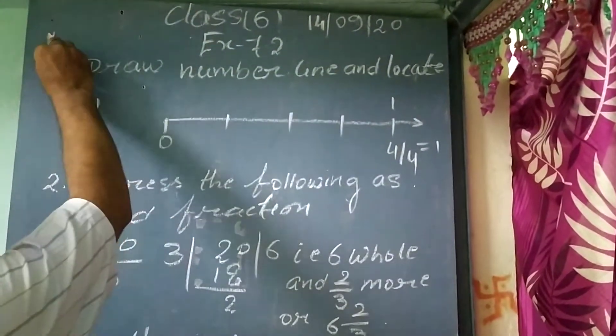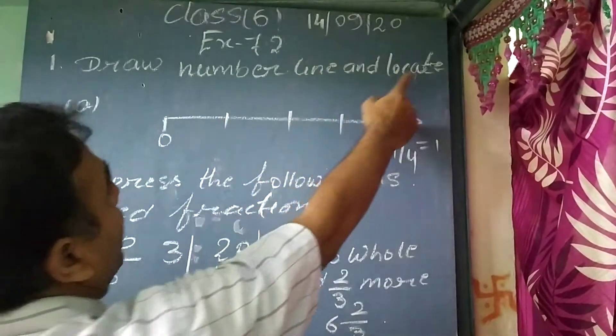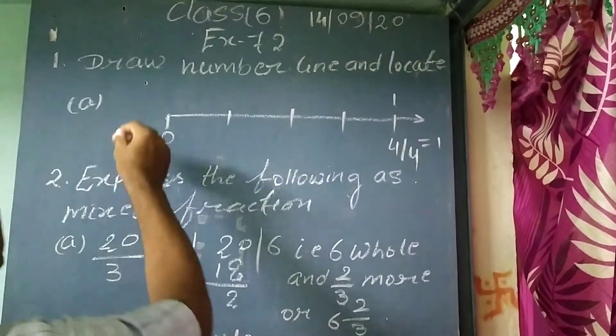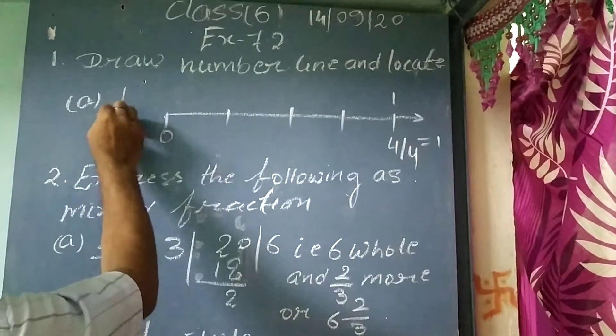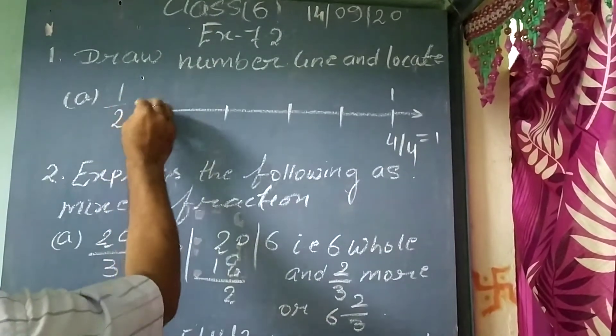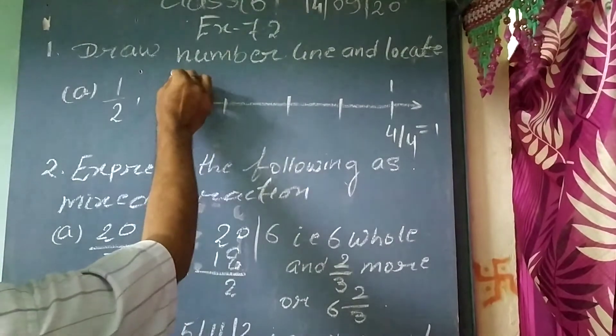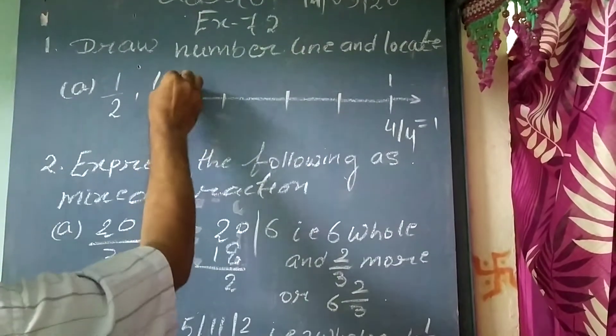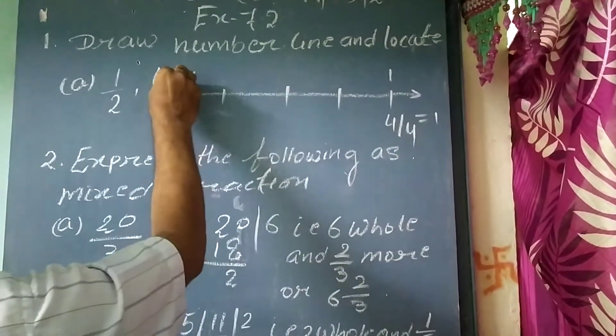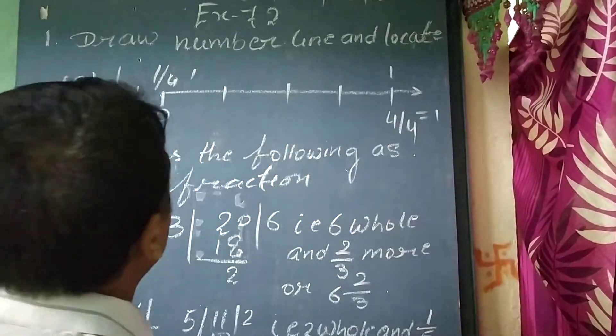Here is question number 1: draw a number line and locate the points 1/2, 1/4, 3/4, and 4/4.